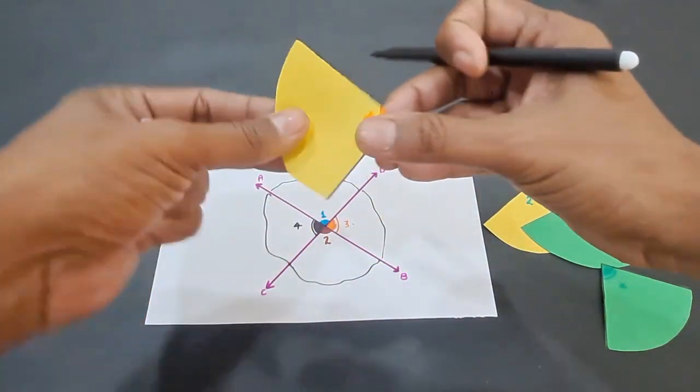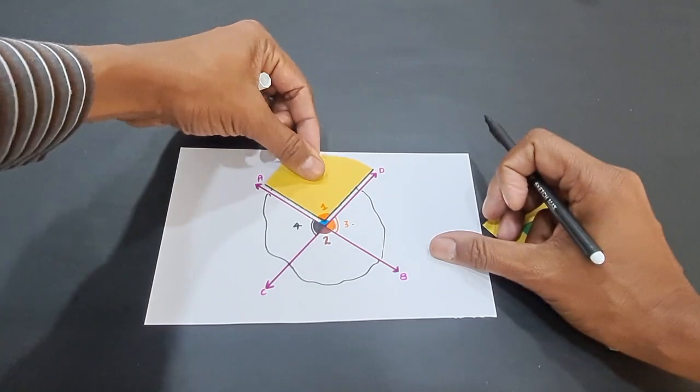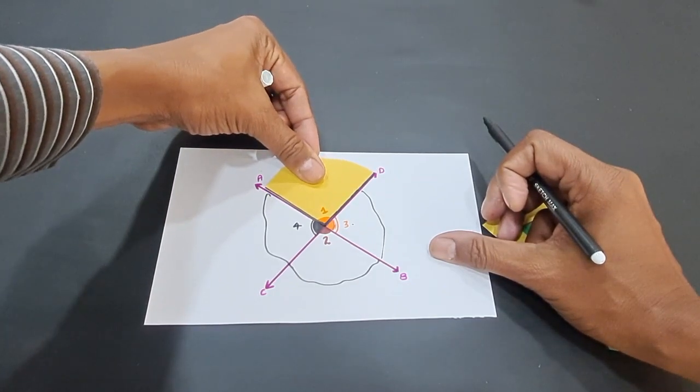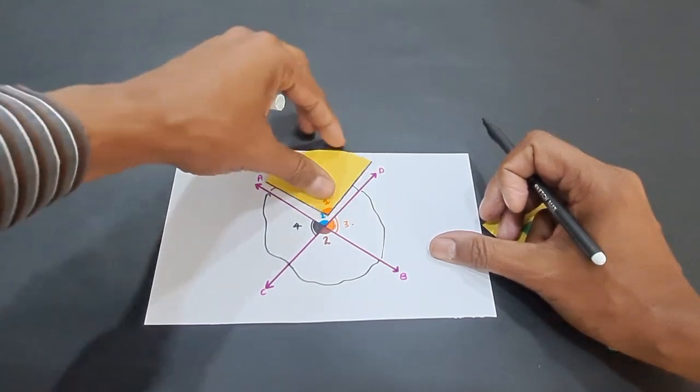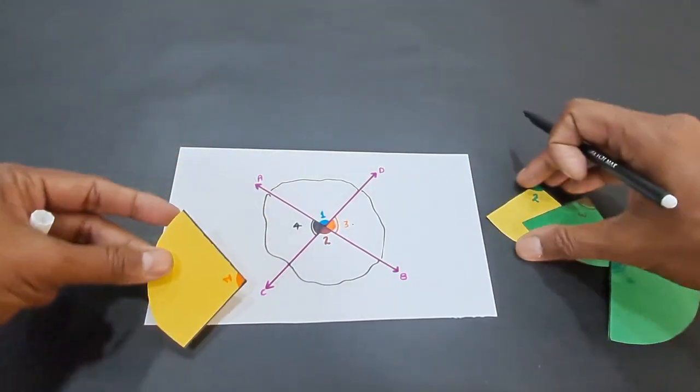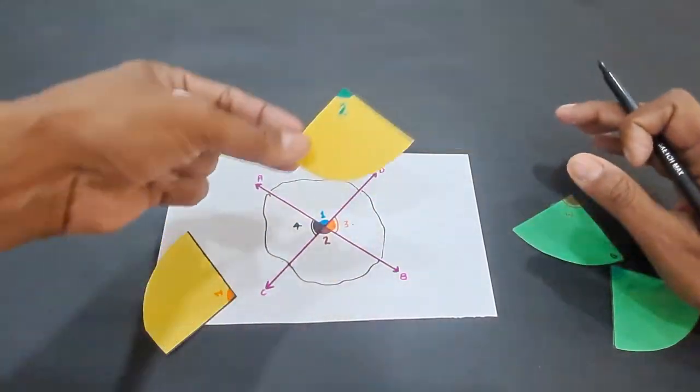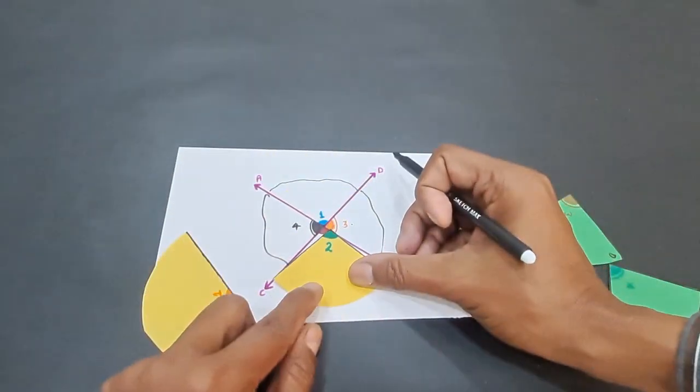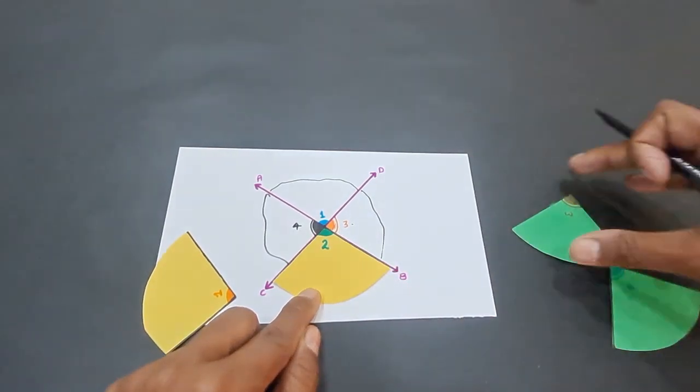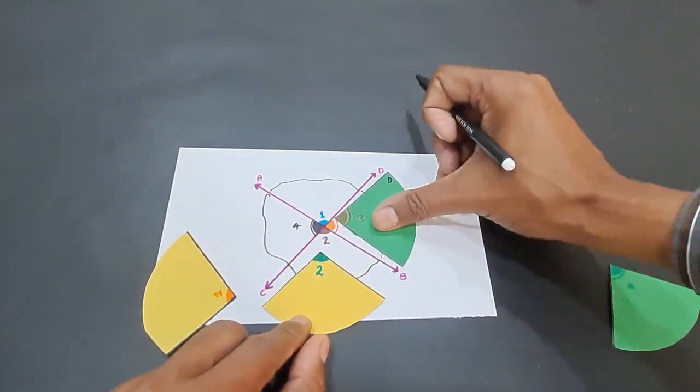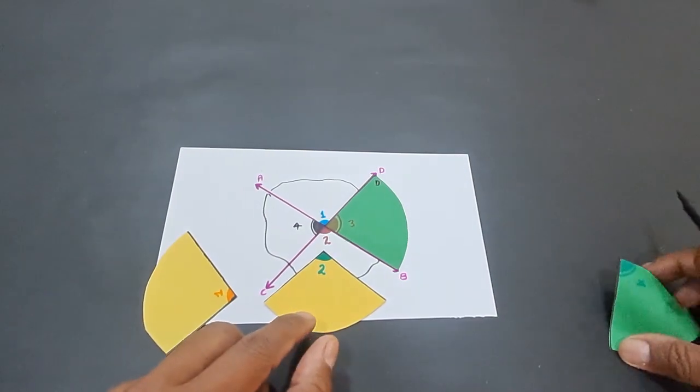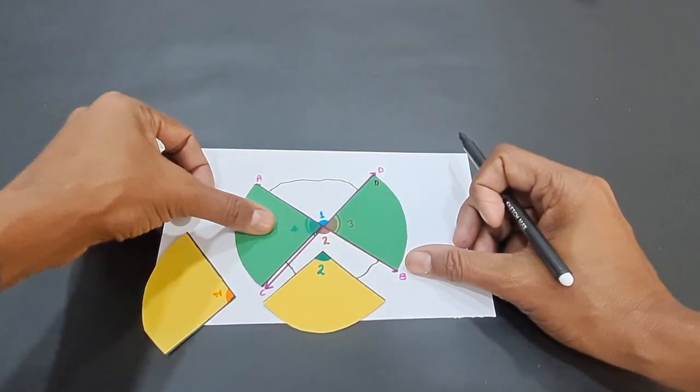You can see angle 1. If I place angle 1 here, this will exactly fit into this gap. This is angle 1, and likewise we have angle 2 here, which is exactly this angle, angle 3, which is exactly this angle, and angle 4, which is exactly this angle.